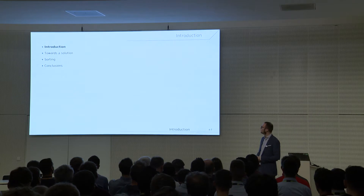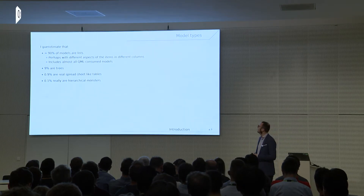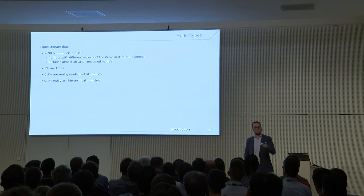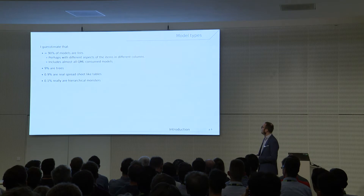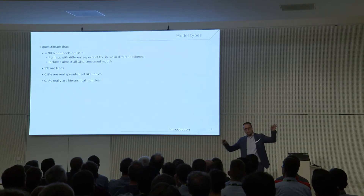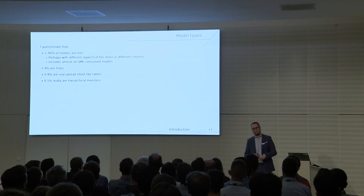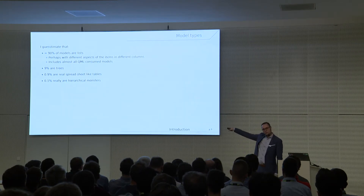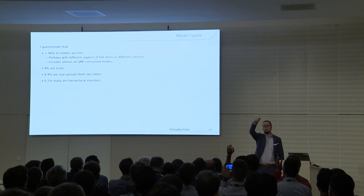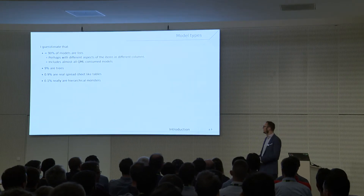I estimate that about 90% of all models are essentially lists, perhaps with different aspects in different columns. For QML consumption, it's essentially a list unless you're using TableView introduced last year. About 9% would be trees — we're not going to talk about those. Around 0.9% might be real spreadsheet-like tables, and 0.1% are hierarchical monsters modeled by the API. I don't think anyone has used that kind of model type — nested tables — so please come talk to me at the KDAB booth because I want to know a use case.